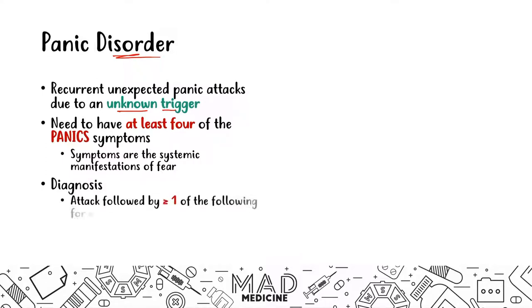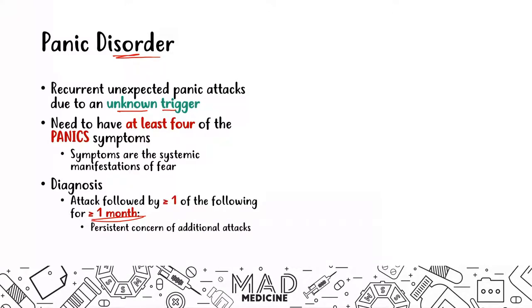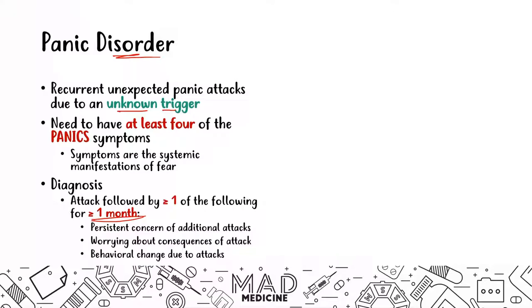To diagnose panic disorder, the panic attack must be followed by one or more of the following for greater than or equal to one month — that's the key diagnostic criterion. Patients must have persistent concern about additional attacks, perhaps fearing it happening in public which would be embarrassing. They may worry about the consequences of the attack, such as being ostracized or having their work or school performance suffer. They may also show behavioral changes, like avoiding going outside, withdrawing socially, becoming snappy or persistently anxious.